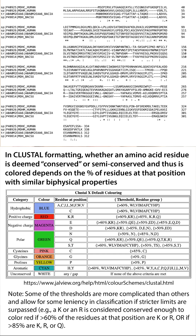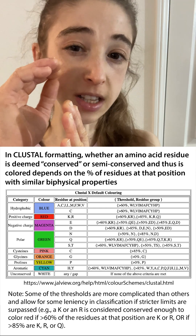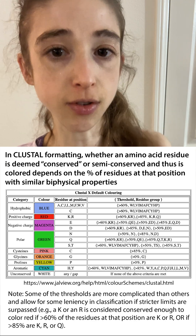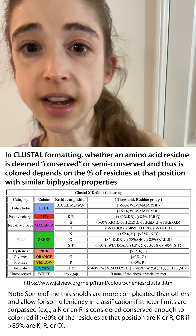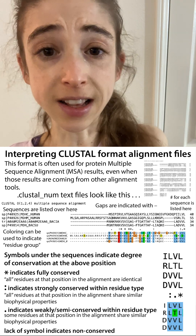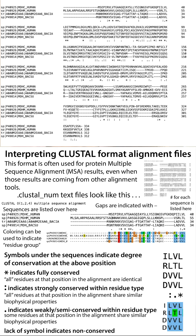The conservation considers whether residues are conserved within the same residue type — meaning amino acids with similar biophysical properties. There's a set of rules that asks, at this position, what percentage of the residues are of a given type: are they hydrophobic, positively charged, negatively charged, polar non-charged, or aromatic? Thresholds based on those percentages then determine whether the position gets an asterisk, a colon, or a dot.